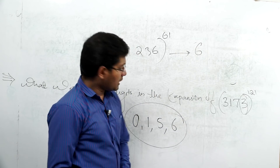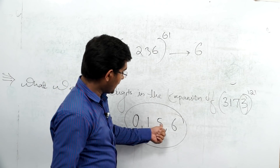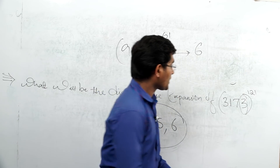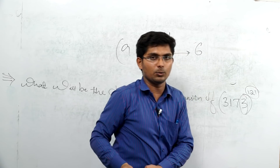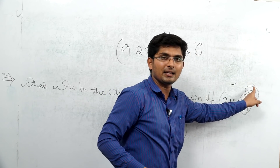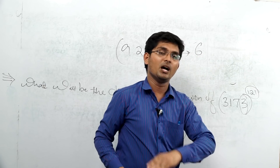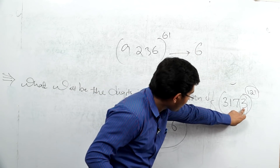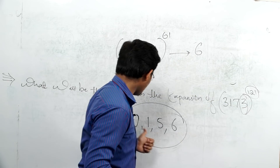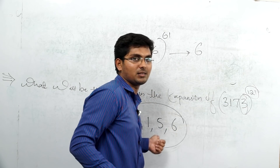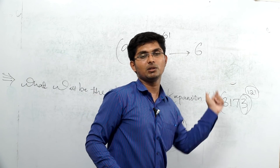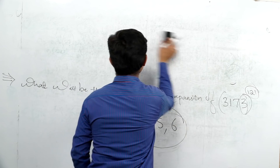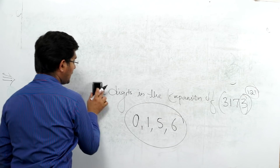So the unit digits 0, 1, 5, and 6 always produce the same unit digit regardless of the power. For any number ending in 0, 1, 5, or 6, the unit digit in any expansion remains 0, 1, 5, or 6 respectively. The number of these special digits is an important concept.